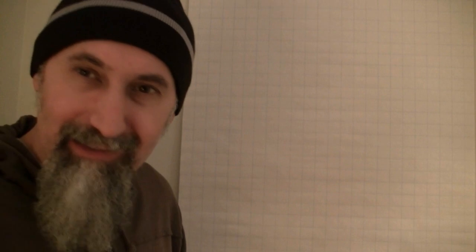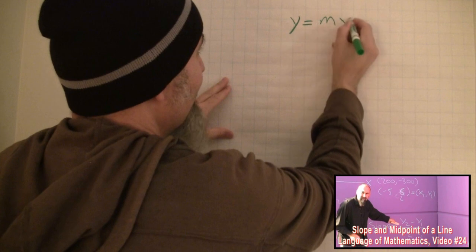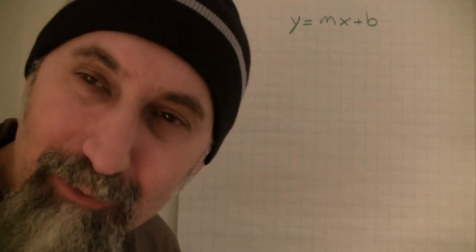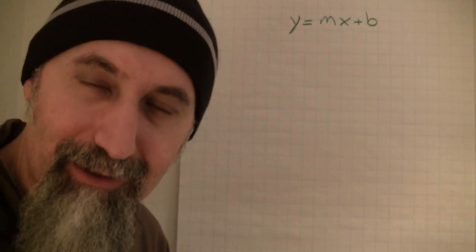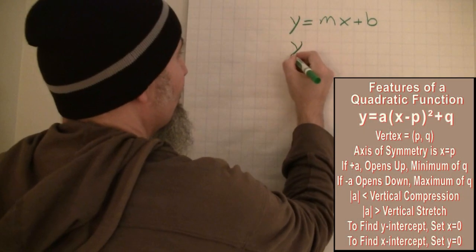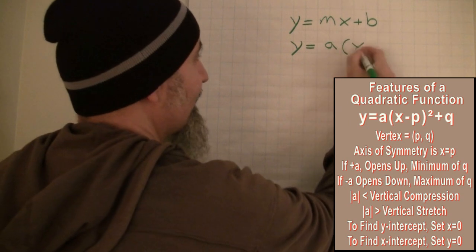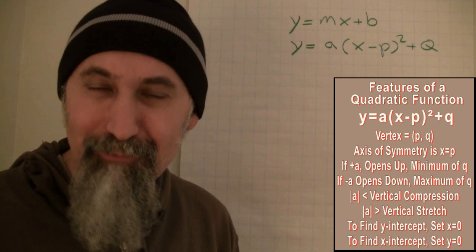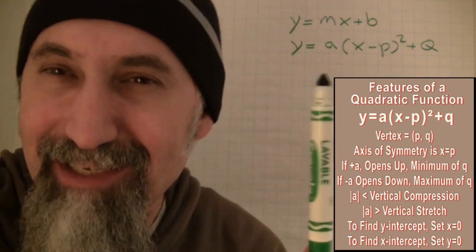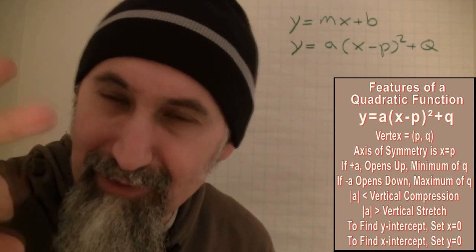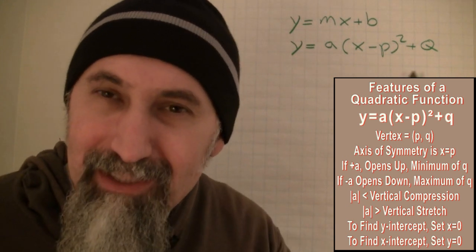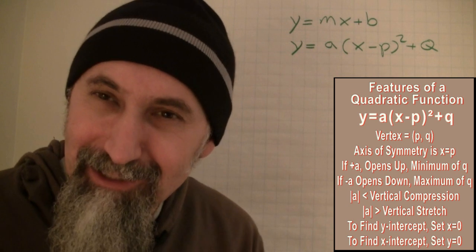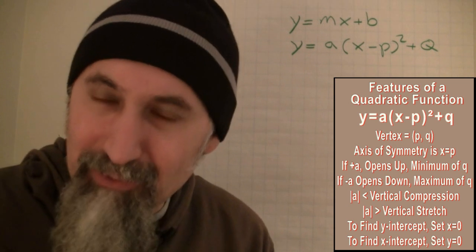So if you're graphing linear functions, they have to be in the form y equals mx plus b, where b is your y-intercept and m is your slope. But to be able to graph a quadratic function — a parabola — what you have to do is put it in the following form: y is equal to a times (x minus p) squared plus q. The a gives you a vertical stretch or compression and it flips the graph; the p and the q are your vertex; x minus p equals zero is your axis of symmetry.